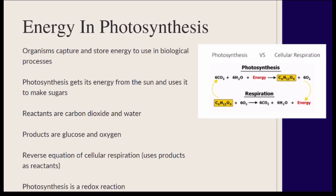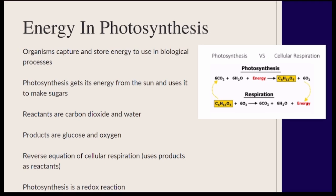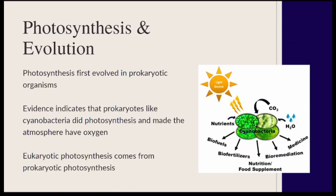Organisms capture and store energy to use in biological processes. Photosynthesis gets its energy from sunlight to make glucose. Its reactants are carbon dioxide and water; its products are glucose and oxygen. Photosynthesis and respiration are essentially reverses of each other — the reactants of one are the products of the other. Photosynthesis first evolved in prokaryotes like cyanobacteria, which are widely believed to have been responsible for oxygen entering the atmosphere.